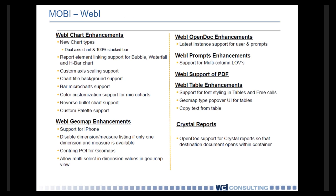In Webi, there are a number of different things. In the current version, not all chart types are supported. There are new chart types supported, including dual axis charts and 100% status stack bars. Also, linking support for bubble, waterfall, and horizontal bar charts. Custom scaling for your axes. Certain different types of micro charts are now supported, as well as color customization, which is a must-wanted feature in the 4.1 version.